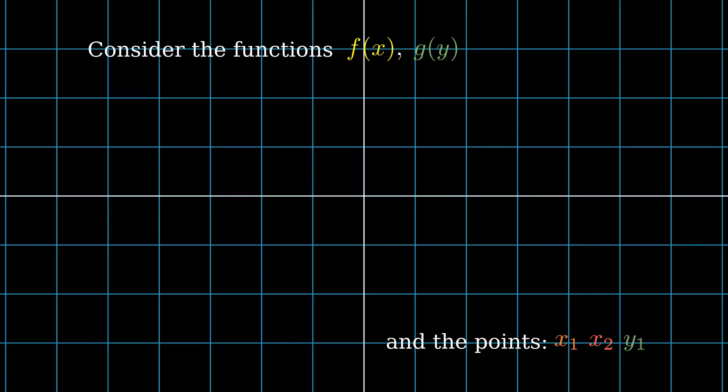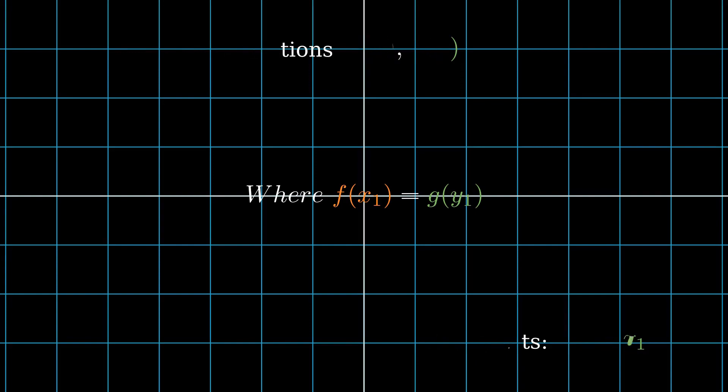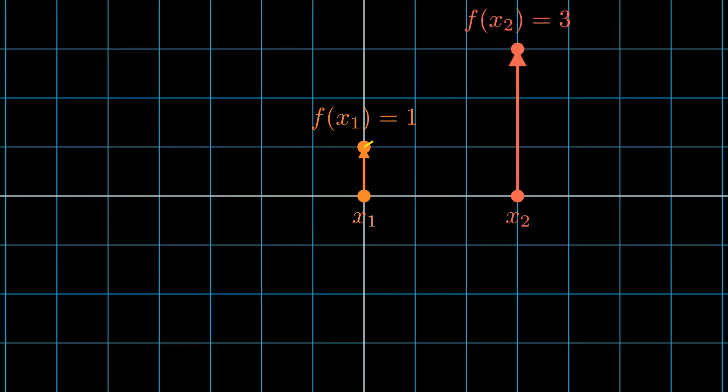In this example, we'll take the value returned by f at x₁ to equal the value of g at y₁. Specifically, let's say that f(x₁) returns 1, and f(x₂) returns 3. Now since we said that g(y₁) be equal to f at x₁, it must be the case that g(y₁) must also return 1.